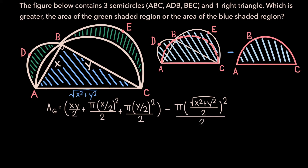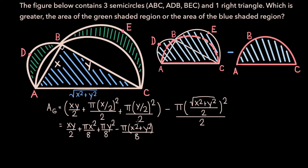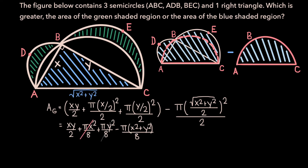If we simplify this a little bit, we get that the area of the green region is xy/2 plus πx²/8 plus πy²/8 minus — and for this term, the squared eliminates the square root, so what we have in the numerator is π times (x²+y²) over 8. You can see that the minus πx²/8 term cancels with the plus πx²/8, and the same is true for the minus πy²/8 and plus πy²/8 terms. All three pi terms cancel, and what we're left with is that the area of the green region is xy/2.